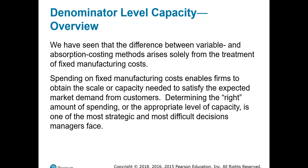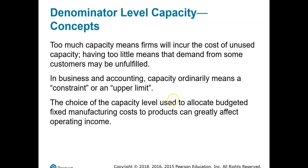What is the right fixed cost per unit? Because so far, we've taken our fixed manufacturing costs incurred divided by the number of units produced to get our budgeted fixed manufacturing costs per unit. But think about capacity — if we have too much capacity, then we have the cost of unused capacity because we're paying for capacity we're not planning on using.